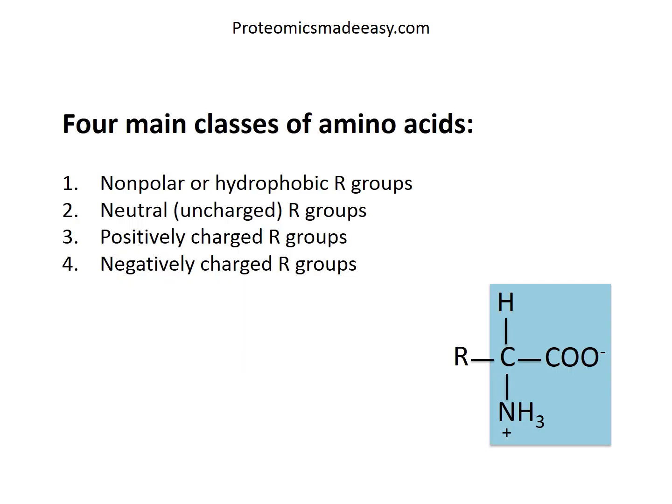There are four main classes of amino acids: amino acids with non-polar or hydrophobic R groups, amino acids with neutral or uncharged R groups, amino acids with positively charged R groups, and amino acids with negatively charged R groups. This is the easiest way to remember the classification of amino acids. Let's see more in detail which amino acids belong to these categories and why.